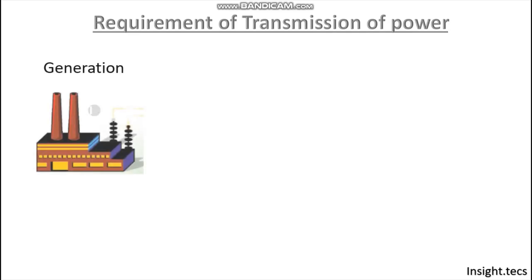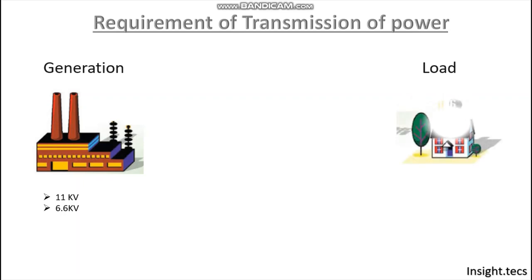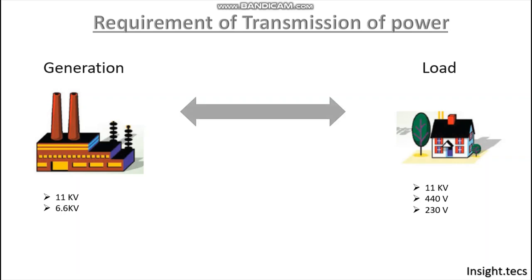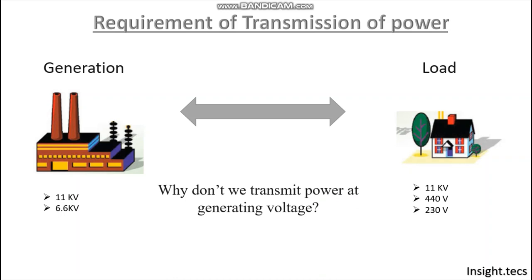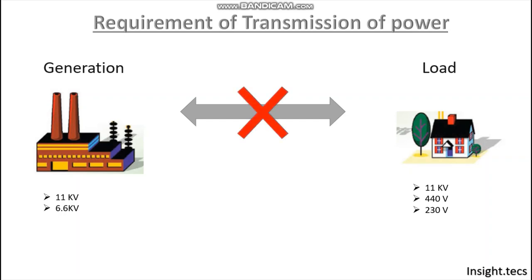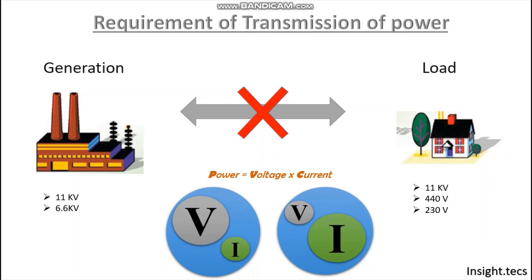As we have understood the requirement of transmitting power, let us understand how the power is transmitted. Basically, the generating voltages at which electricity is generated are 11 kV or 6.6 kV. At the load end, the voltage levels are 11 kV, 440 volts, or 230 volts for household purposes, and 11 kV for industrial purposes. Can we transmit power at generating voltages or load voltages? The answer is no. The primary reason is that power equals voltage into current, so to transmit power, either voltage or current must be increased.